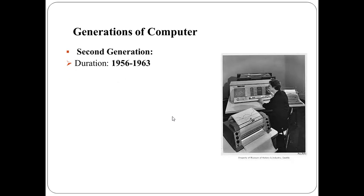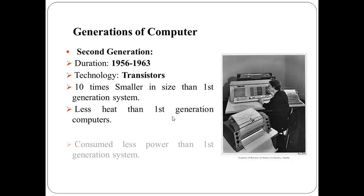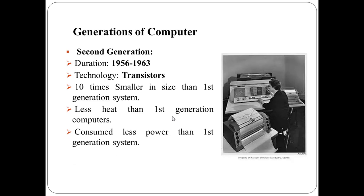The second generation computers were transistor based machines. The duration of the second generation is from 1956 to 1963. They used the stored program concept, and programs were written in assembly language. They were smaller in size, less expensive, and required less maintenance than first generation computers. The computation time was in microseconds.